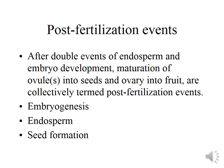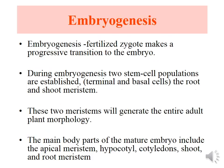So there are three events after fertilization occur, called post-fertilization events. These events include embryogenesis, endosperm, and seed. So plant embryogenesis is a process that occurs after the fertilization of the ovule to produce a fully developed plant embryo.